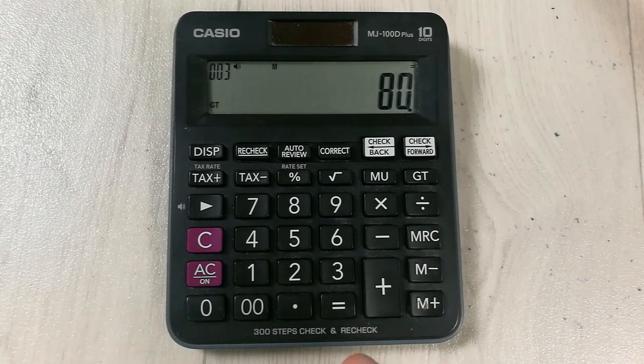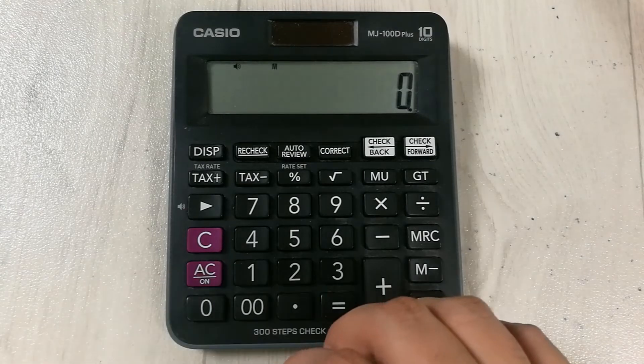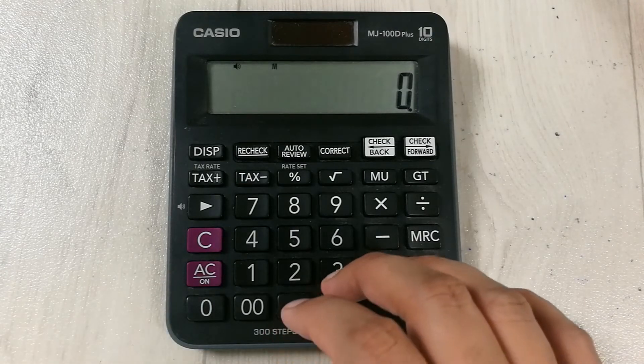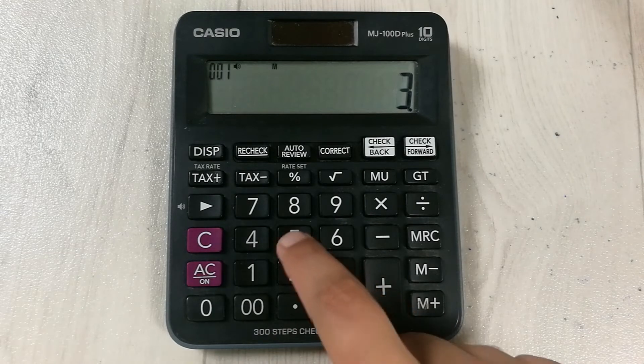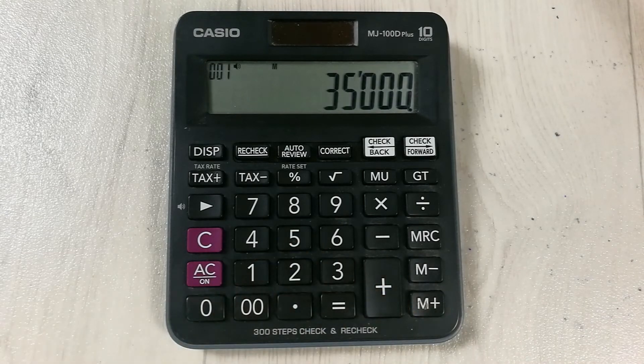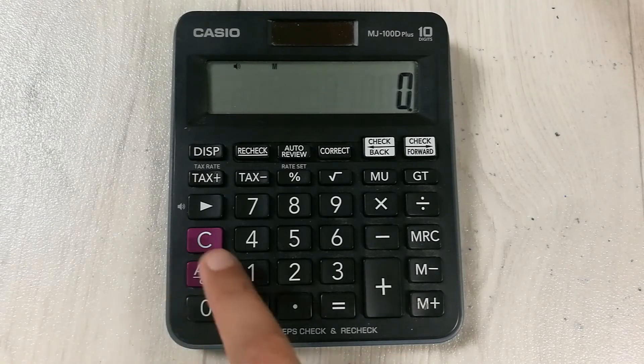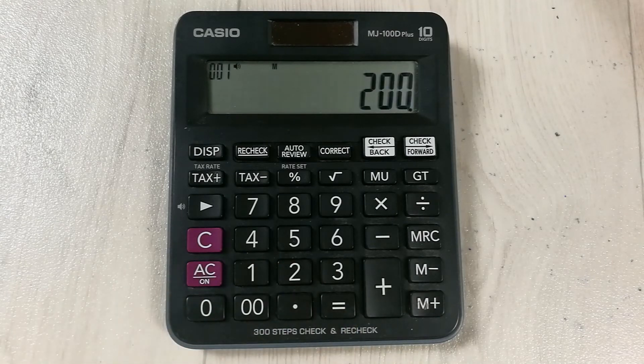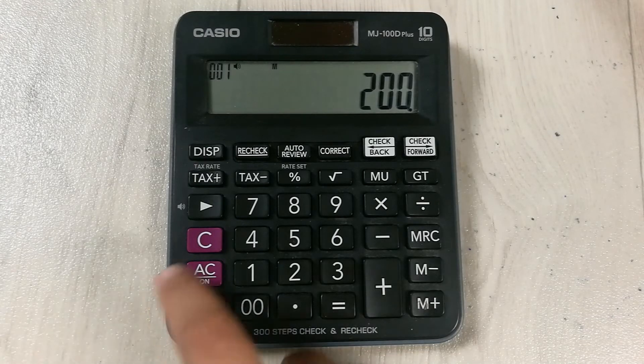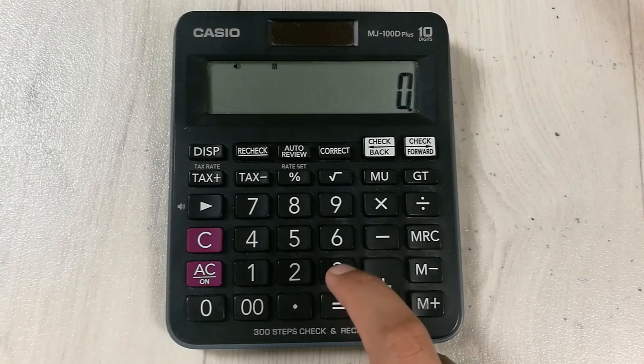Let's move to another example. Let's say our net sales are 35,000 and our number of items sold are 200. So to find out the average selling price, what we will do is we divide the 35,000...